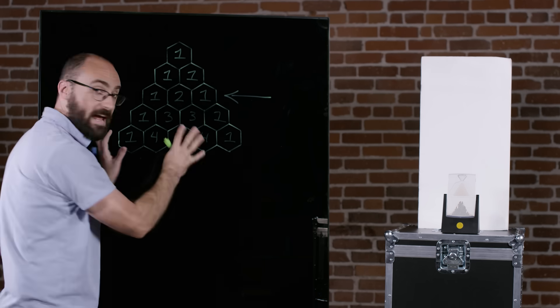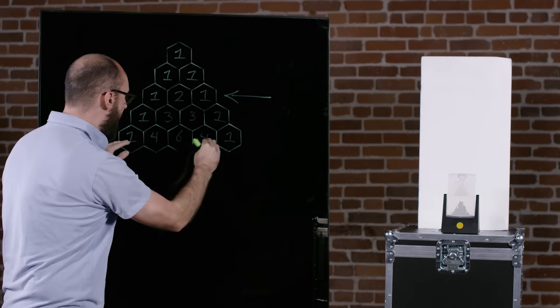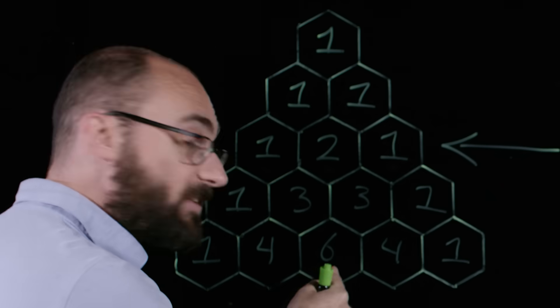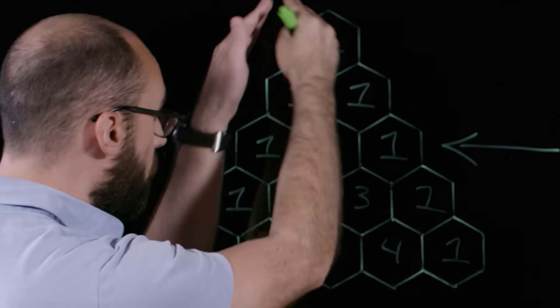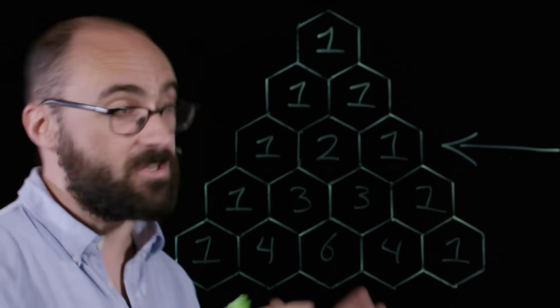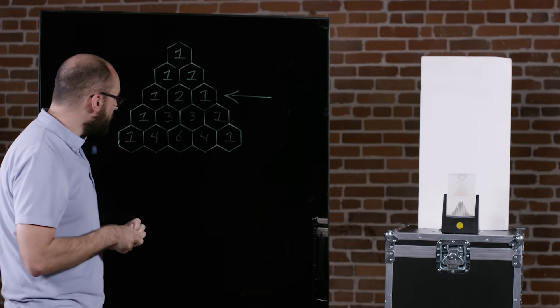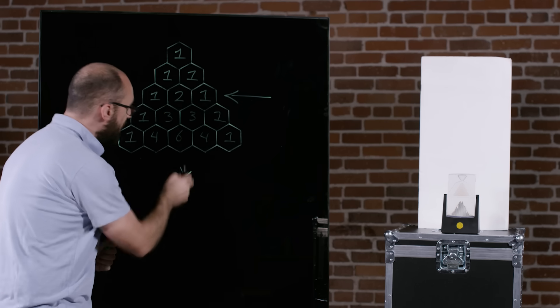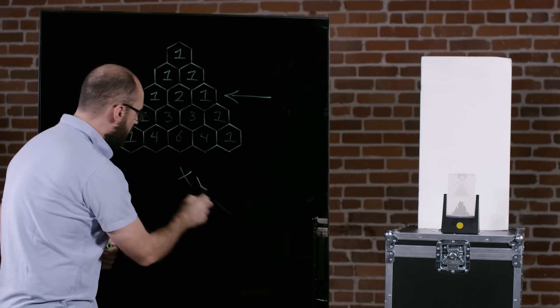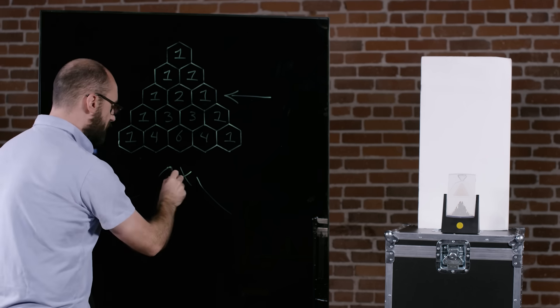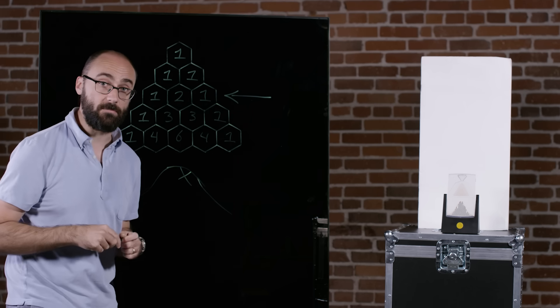Now, this pattern continues on. As you can see, there are more and more paths downward as we continue. But the middle destination is always served by the largest number of paths possible for a ball to take. Which means that we should expect more balls to show up in the middle and fewer as we go further out to the edges. Ta-da! A normal distribution.